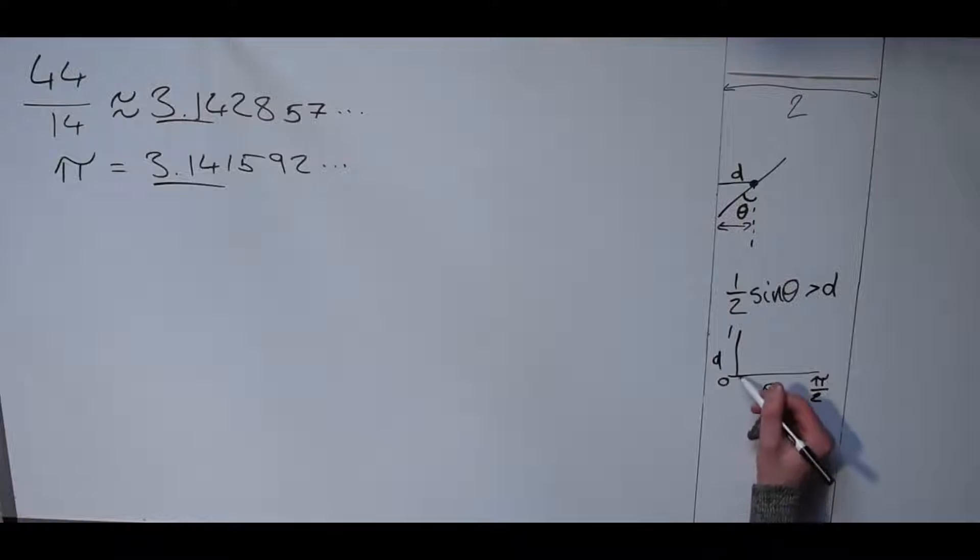If you draw half sine theta on here, it's going to look something like that. We want d to be less than that, or in other words, anywhere under the curve.